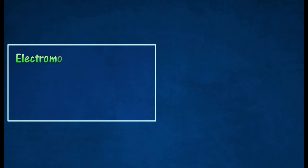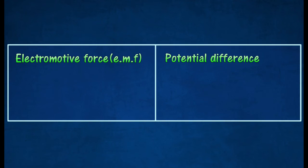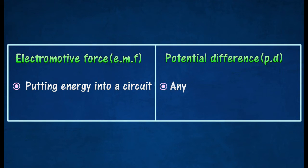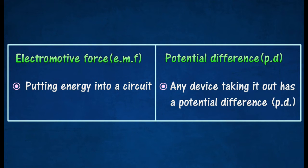In any circuit there are components that put energy into the circuit and components that take energy out. Any device putting energy into a circuit is providing an electromotive force or EMF, and any device taking it out has a potential difference, PD, across it.